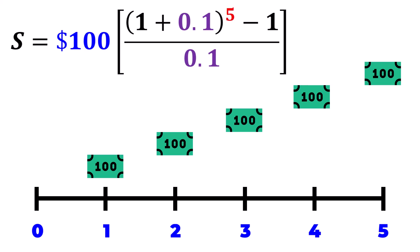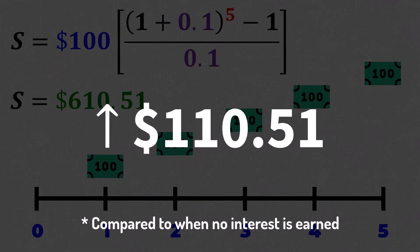we learn that by the end of the 5th year, your 5 installments will mature to $610.51, which is a gain of $110.51.